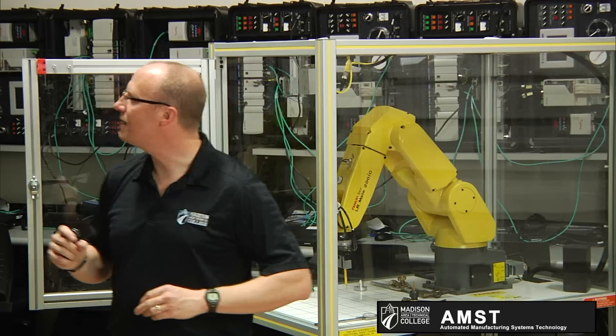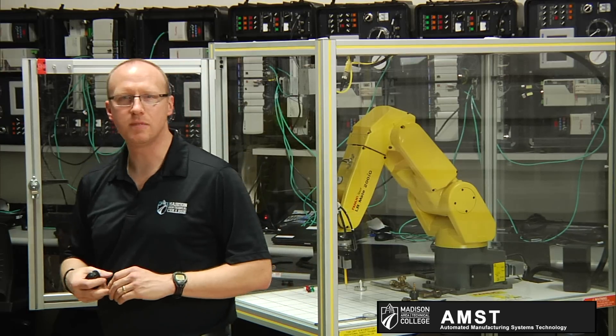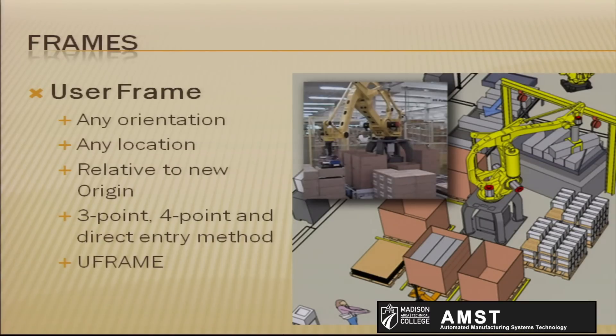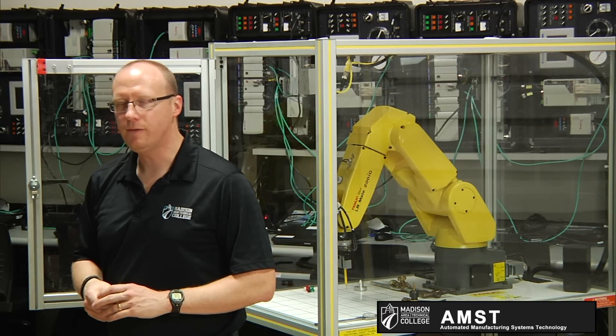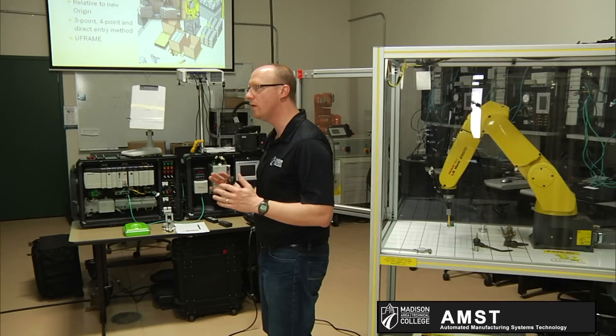In this example we have multiple good items that could be used as a user frame. A user frame is nothing else than a point, an origin you specify, and the x and y direction of it. That frame then is a reference to the world frame, and any point that you teach within the user frame will be tied to the user frame. So if the user frame moves or you reteach that user frame, those points move along with it.